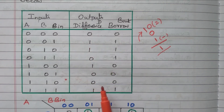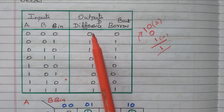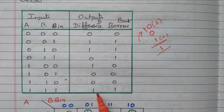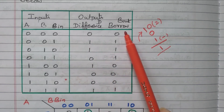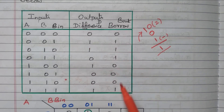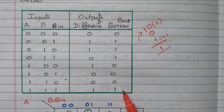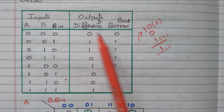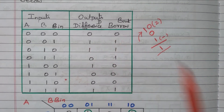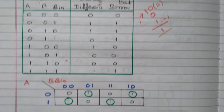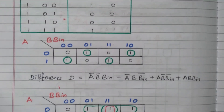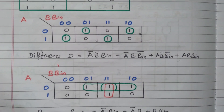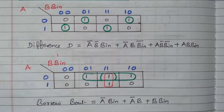For this output, we need to construct the Boolean expression in order to implement the logic gates. In the difference column there are four 1s available, and in the Borrow-Out column also four outputs are available. Using the K-map, we need to find the simplified expression for difference as well as borrow.